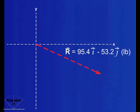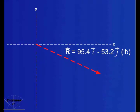Therefore, resultant vector R equals 95.4i minus 53.2j in pounds.